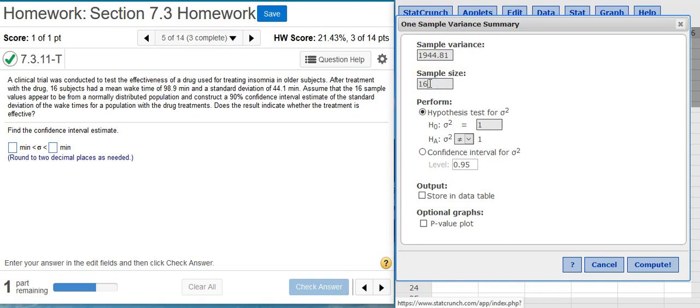The sample size is 16. We want a confidence interval, and we want to construct the confidence interval estimate with a 90% confidence level. So I need to change this default value from 95% to 90%. Hit Compute.